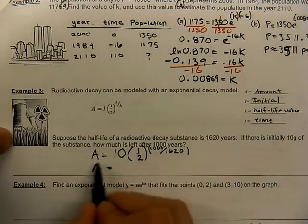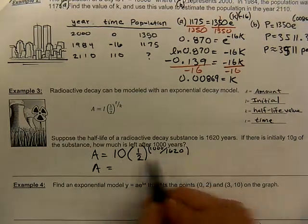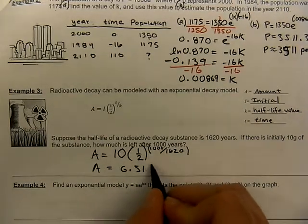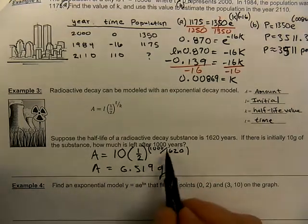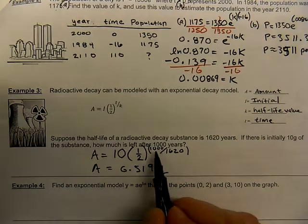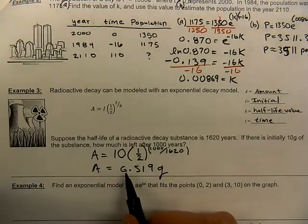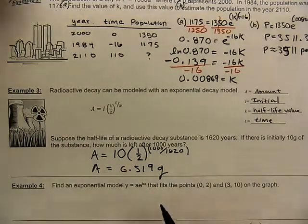Notice my variable is already by itself. We don't have to convert this into a logarithm or anything. We just go right to our calculator. We said that half of 10 would be 5. So 5 grams is what you would get if you waited the full 1620 years. But we didn't quite wait that much. So that means it hasn't decayed down to 5 grams. It's at 6.519.